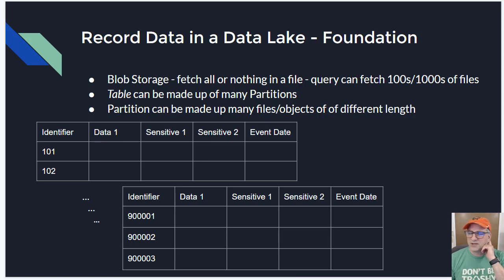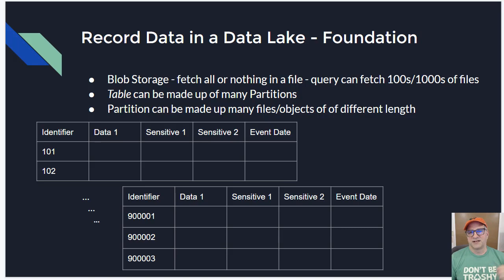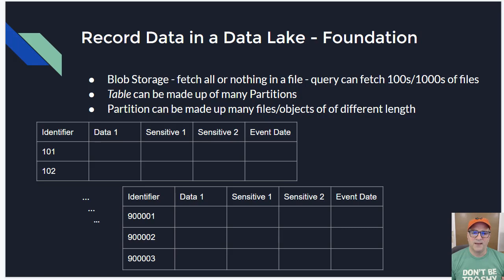For this discussion, I'm really going to talk about record data — data that's record-oriented, typically relatively flat although it could be hierarchical in a row. It's stored in blob storage, where you basically fetch an entire file. We're going to treat blob storage as a table store, and the table is made up of partitions so that we can split them across compute nodes, with each partition made up of multiple files.